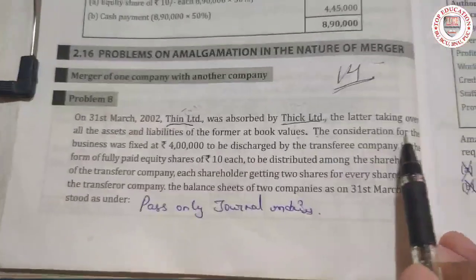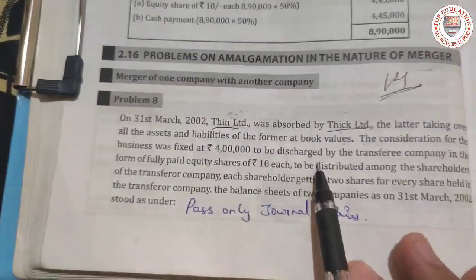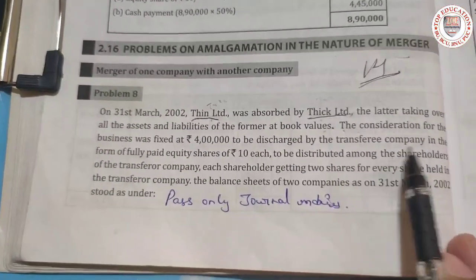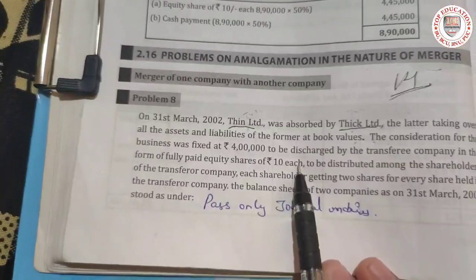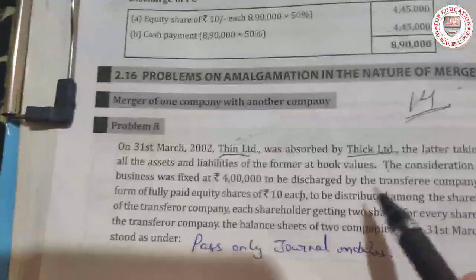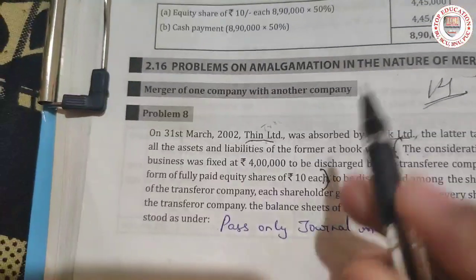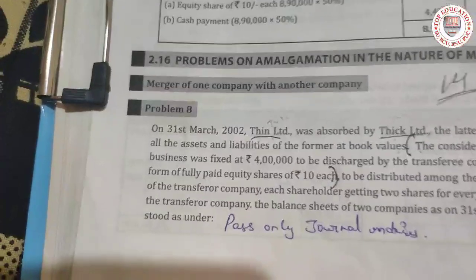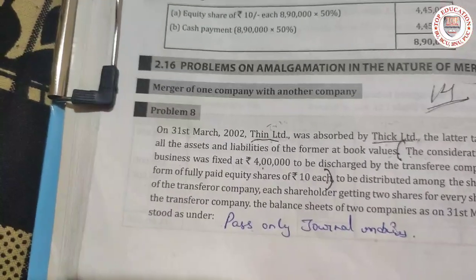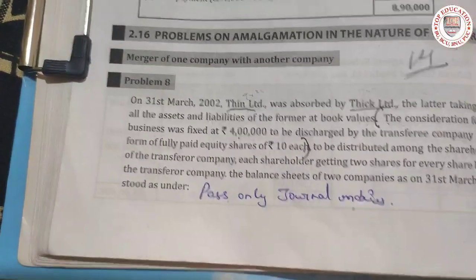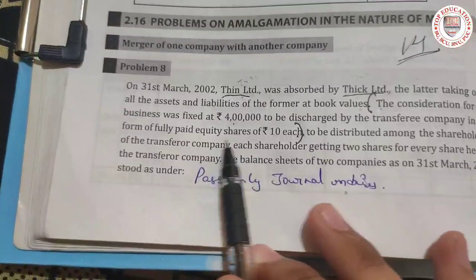The consideration for the business was fixed at 4 lakh, to be discharged by the transferee company in the form of fully paid-up equity shares of rupees 10 each. So the purchase consideration of 4 lakh is to be given in the form of equity shares to the shareholders.